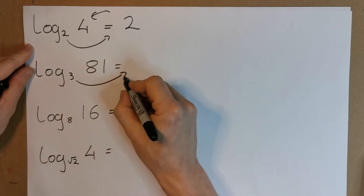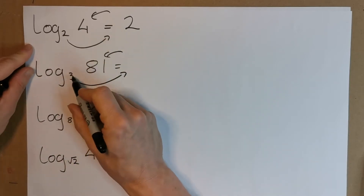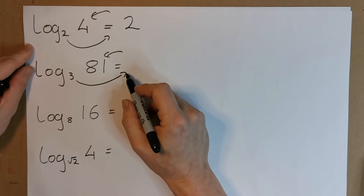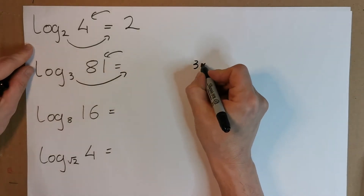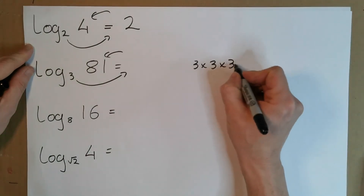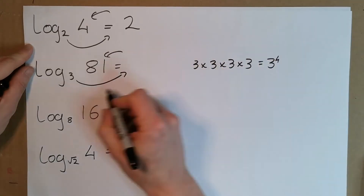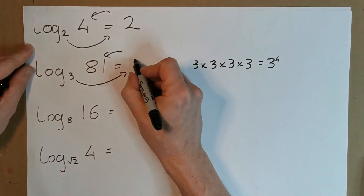Similarly, 3 to the power of something gives me 81. Well, 3 squared — 3 by 3 to the power of 2 gives me 9. 3 to the power of 3 gives me 27. And 3 to the power of 4 gives me 81. So it's just 3 by 3 by 3 by 3, which is 3 to the power of 4. So 3 to the power of something gives me 81, and that is 4.